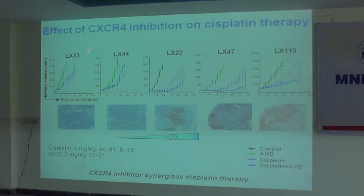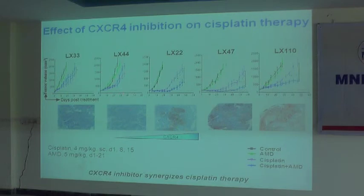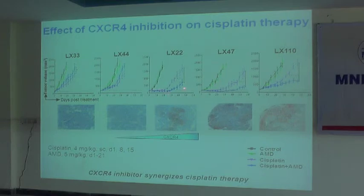Two of the tumors have zero CXCR4 expression, and then we have one-plus, two-plus, and three-plus. We put them on cisplatin combined with CXCR4 inhibitor therapy. The black is the control, green is CXCR4 inhibitor, pink is cisplatin, and blue is the combination therapy. When there is no CXCR4 protein in the tumors, adding CXCR4 inhibitor to cisplatin really doesn't make any difference in tumor growth. But if the tumors have even a little bit of CXCR4 expression, combining these agents with CXCR4 inhibitors significantly impacts tumor growth. The higher the CXCR4 expression, the better the response to existing chemotherapy.